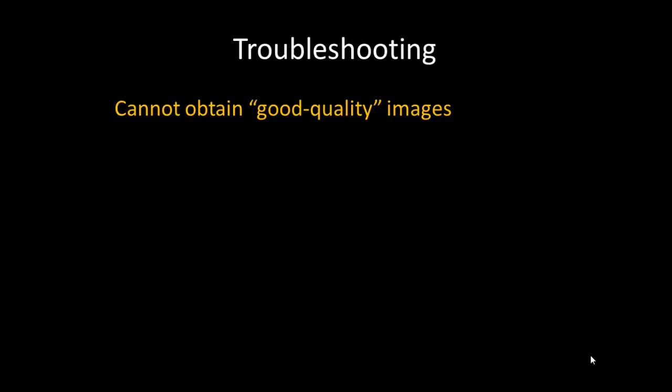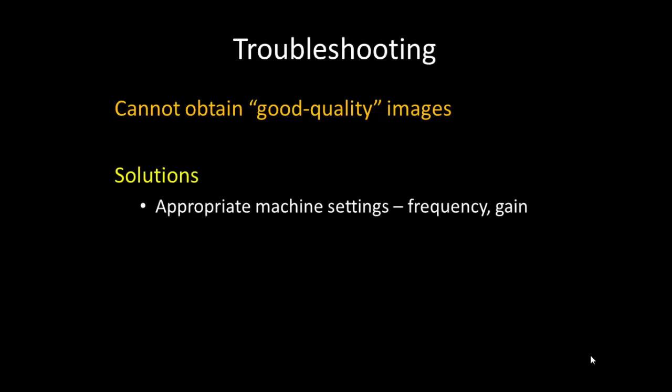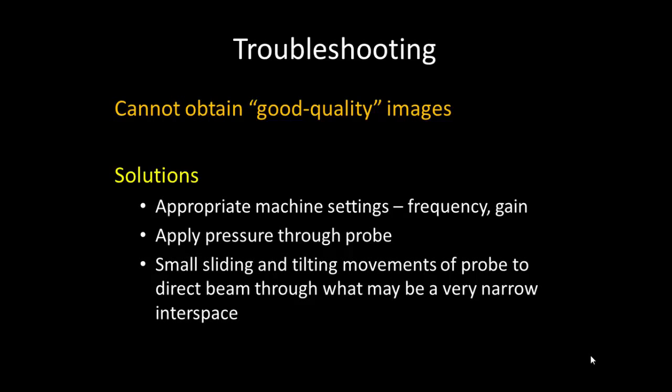If a good quality image of the vertebral canal cannot be obtained, the following measures may help. In more obese subjects, try reducing the frequency setting to see if that improves penetration. The gain should also be adjusted appropriately. Application of pressure through the probe reduces the effective depth and often improves the image. In older patients with degenerative spine disease, small controlled sliding and tilting movements of the probe may be needed to direct the beam through the narrowed lumbar interspaces.